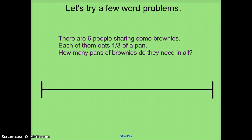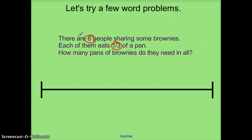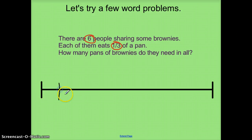Now let's look at a few word problems and see how we can use a number line to solve them. This problem says there are six people sharing some brownies and each of them eats one-third of a pan. The question is how many pans of brownies do they need in all? The amount eaten goes up by one-third per person, and there are six people, so I need at least six marks on my number line — I'll draw zero through eight.